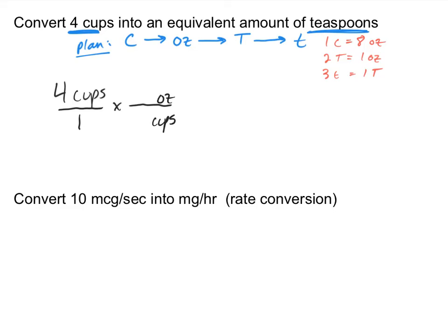I want to go from cups into ounces, so ounces goes in the numerator. We can take the simplified approach: cups will cancel, and we go into ounces. I know that one cup equals eight ounces. If I stopped right now, cups would cancel and the product would give an equivalent amount of ounces. But I don't want ounces, so I'll continue by multiplying by another conversion factor to cancel out ounces — meaning ounces needs to be in the denominator. I'm going from ounces into tablespoons.